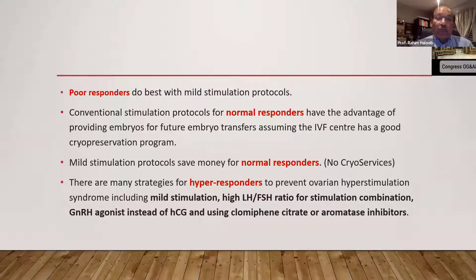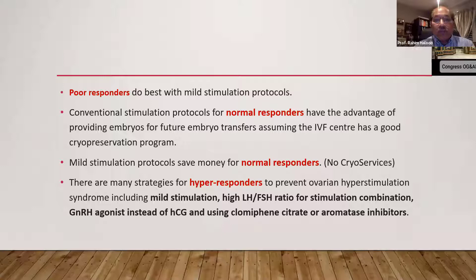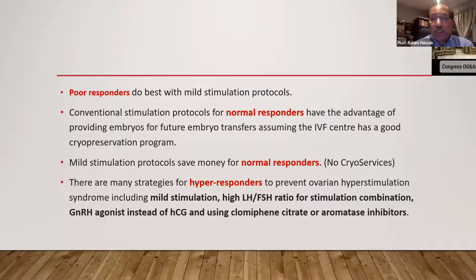In conclusion: poor responders do best with mild stimulation. For normal-population patients, the majority have the advantage of producing embryos for future transfer by adopting the long protocol or antagonist protocol. Mild stimulation can be utilized for normal responders especially if you do not have a service for cryopreservation. In normal responders, the agonist or antagonist protocol will produce more follicles and more embryos for future pregnancy after cryopreservation.